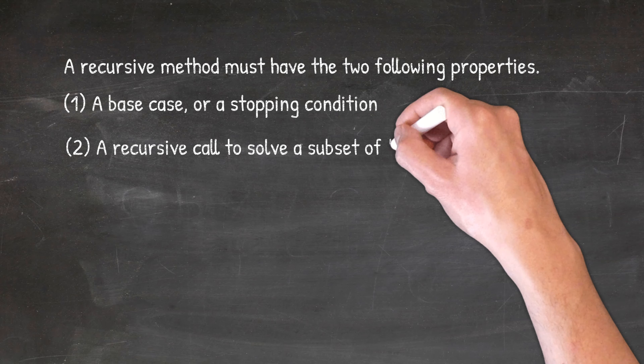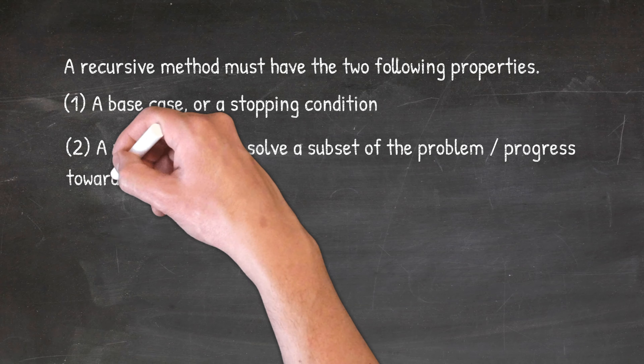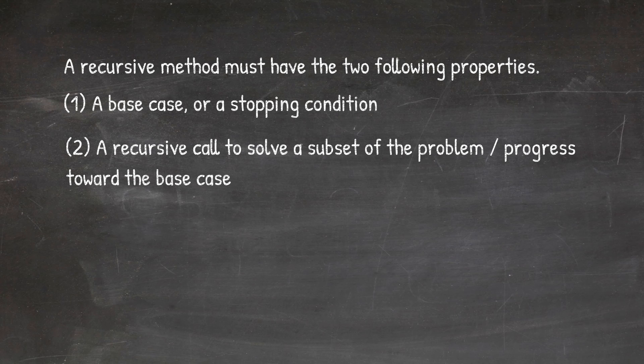Number two, a recursive call. In every call, the method must solve a part of the main problem. When the method calls itself, the call must receive a smaller problem than the problem the current method is handling. Structurally, the smaller problem should have the same properties as the current problem. Only the size of the problem should be smaller in the next call. In particular, we have to make sure that each call is moving the granulated problem toward the base case, which is the terminating condition.